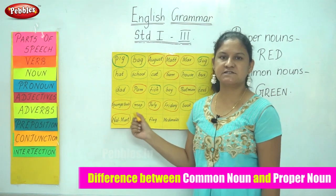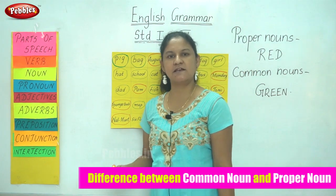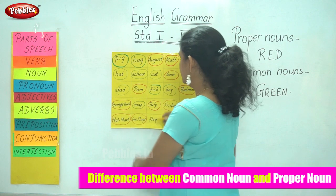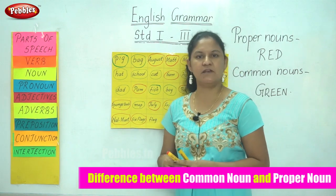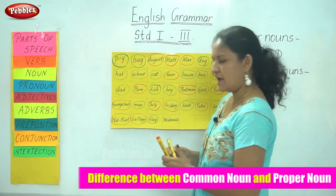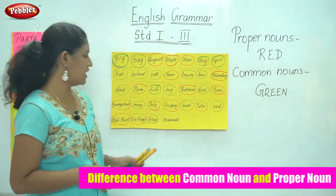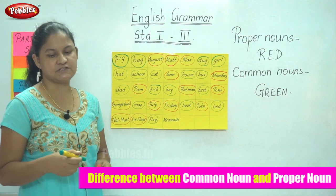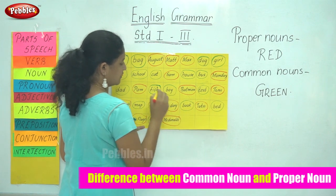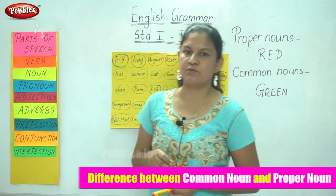The next is Six Flags. Six Flags is the name of a place, it starts with a capital letter, and is a proper noun. Flag is a common noun, so I use my green to circle flag. And McDonald's is the name of a popular restaurant, it starts with a capital letter, and is a proper noun, so I use my red to circle it. I hope you have understood the difference between proper noun and common noun.